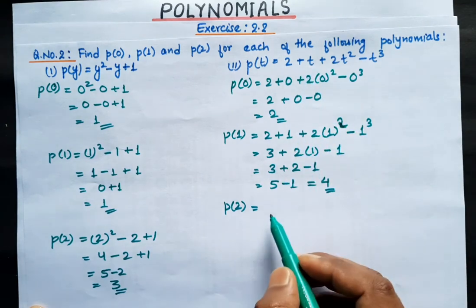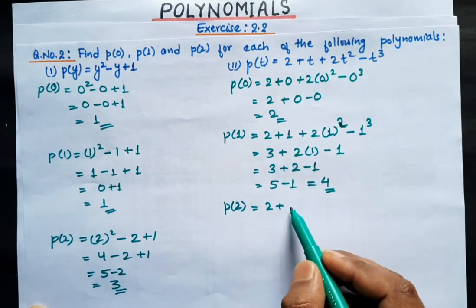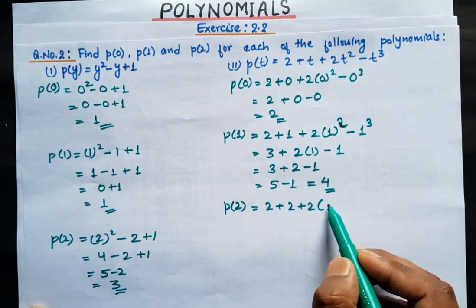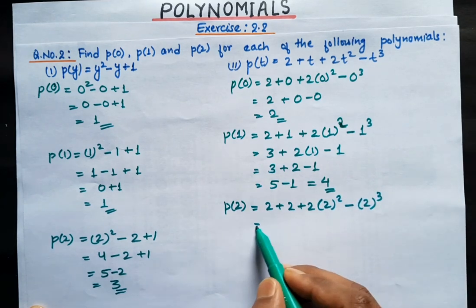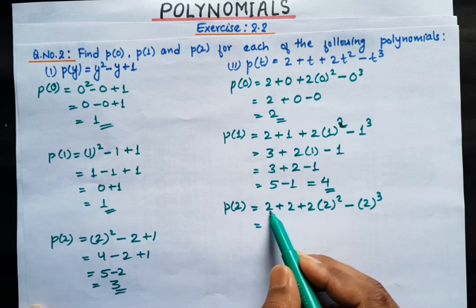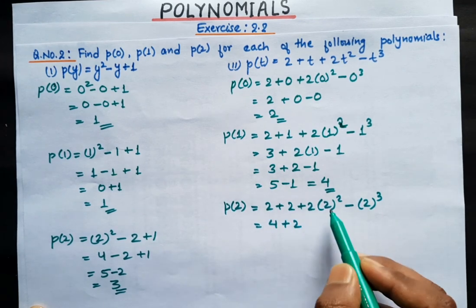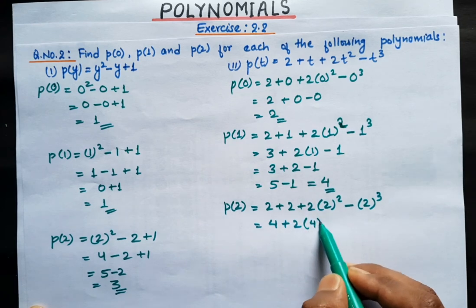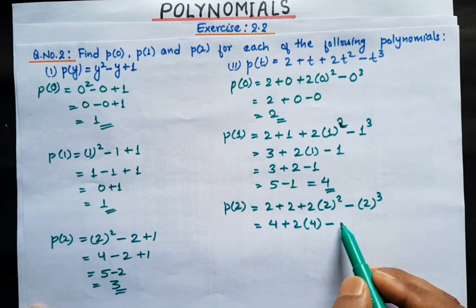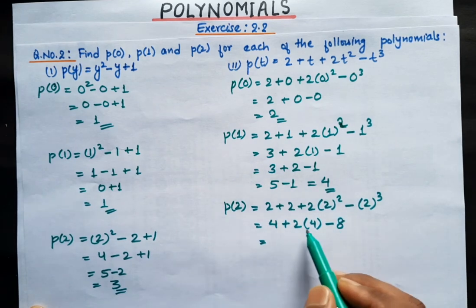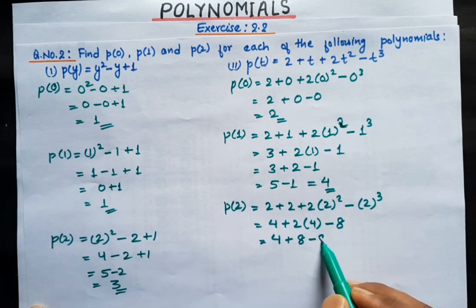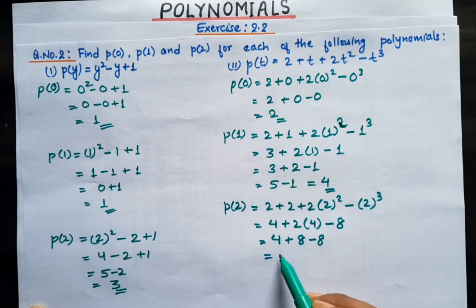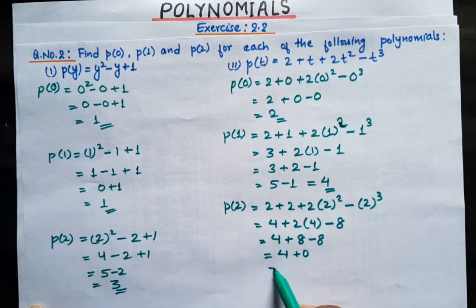Now for P2: put t = 2, giving 2 + 2 + 2(2²) - 2³. That is 4 + 2 times 4, which is 8, minus 2 cubed which is 8. So 4 + 8 - 8 equals 4. P2 = 4. That completes question number 2.